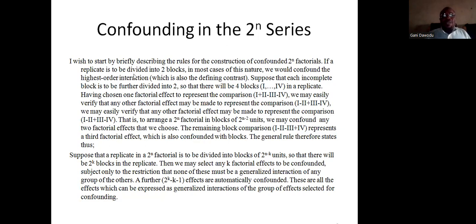If a replicate is to be divided into two blocks, in most cases of this nature we would confound the highest interaction, the one that is sometimes referred to as the defining contrast in the factorial experiment. Suppose that each incomplete block is to be further divided into two so that there will be four blocks, one, two, three, four, in a replicate. Having chosen one factorial effect to represent the comparison, we may easily verify that any other factorial effect may be made to represent the comparison.